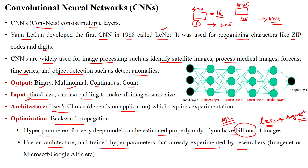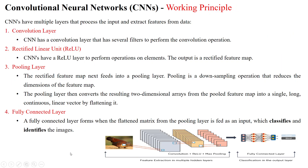You can also use architecture trained hyperparameters which are already experimented by researchers — that means some hyperparameters are already trained, called trained weights or trained parameters, which are available to classify images. This is called ImageNet, or we have Microsoft or Google APIs available. The convolutional neural network has multiple layers which process the input to extract features of the given input image.